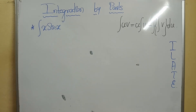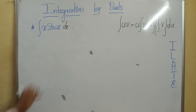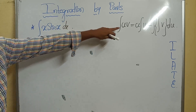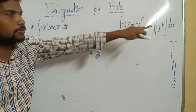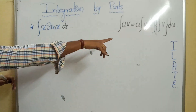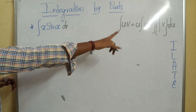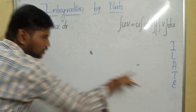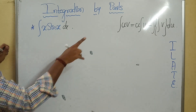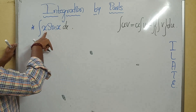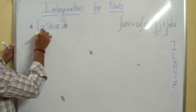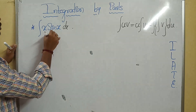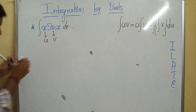Now the example: integral of x·sin(x) dx. I wrote the formula: integral of u into v equals u times integral of v minus double integral of v times derivative of u. Based on the ILATE rule, x is algebraic and sine is trigonometric — algebraic comes first — so x is treated as u and sin(x) is treated as v.